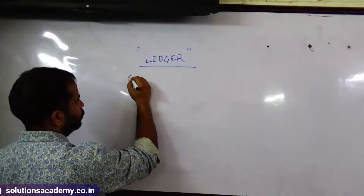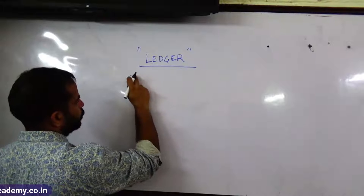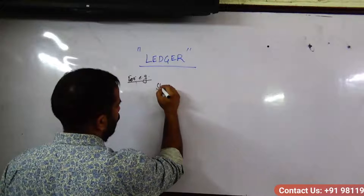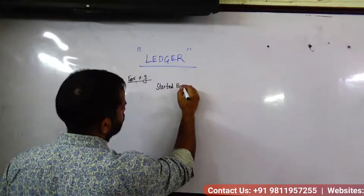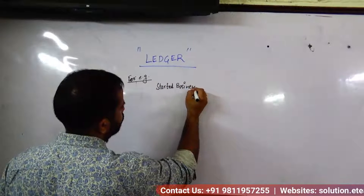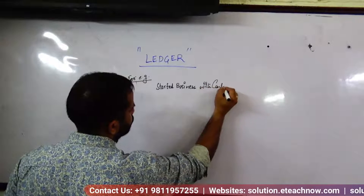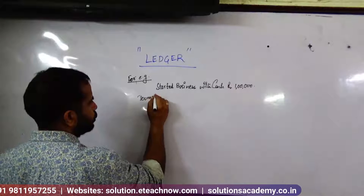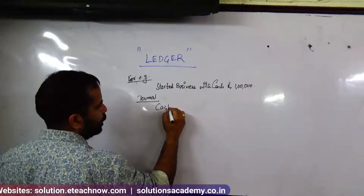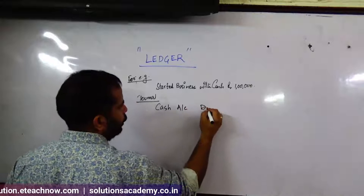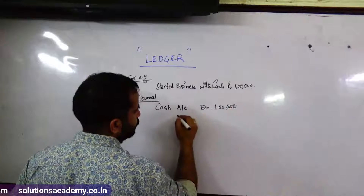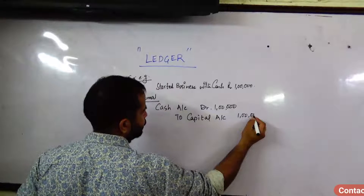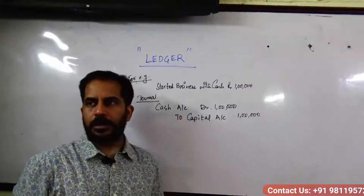For example, if you started business with cash rupees 1 lakh, the journal entry is: Cash account debit 1 lakh, Capital account 1 lakh. This is the journal entry. If you have started a business, the journal entry would be: Cash account debit, Capital account credit.